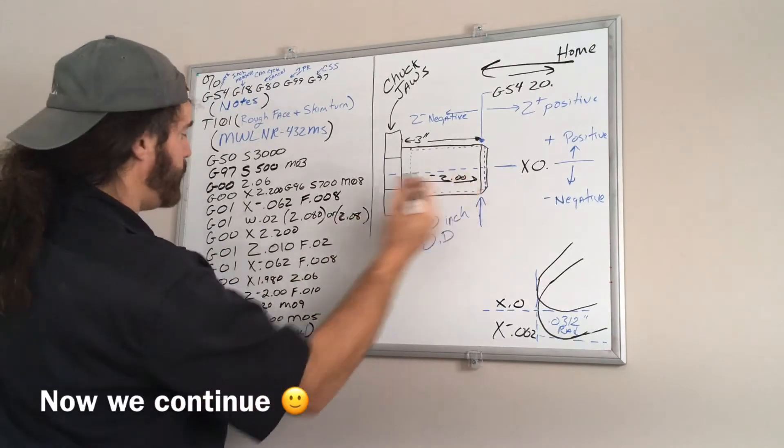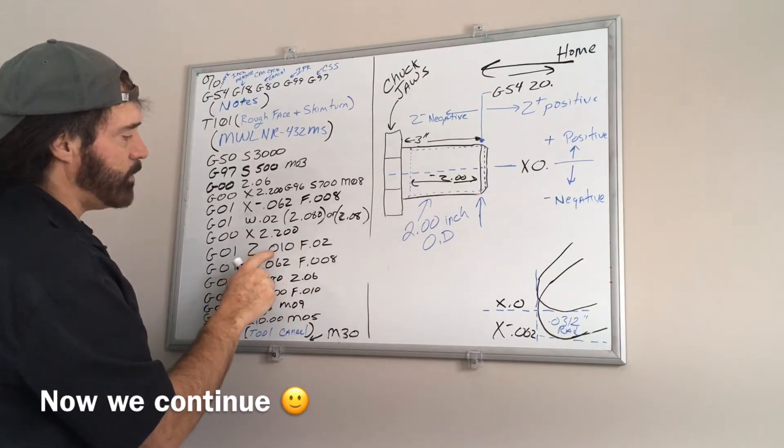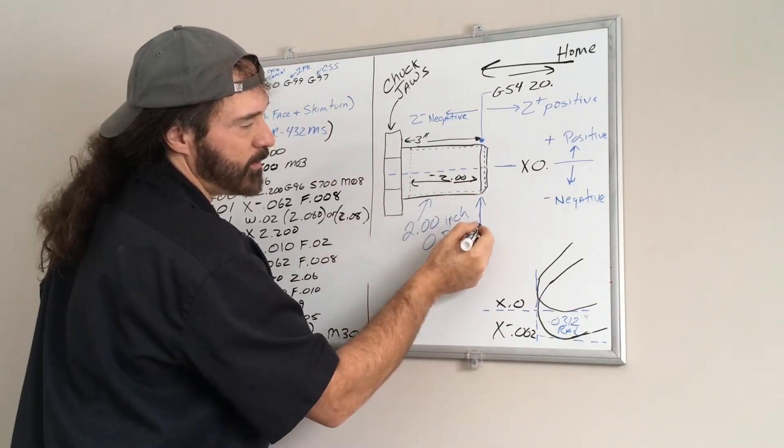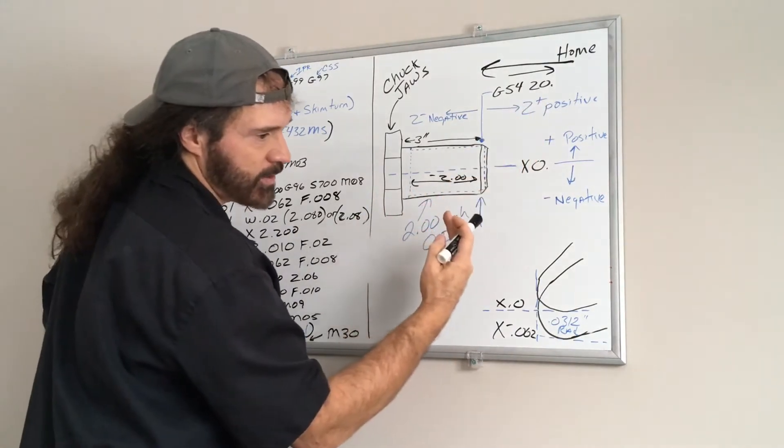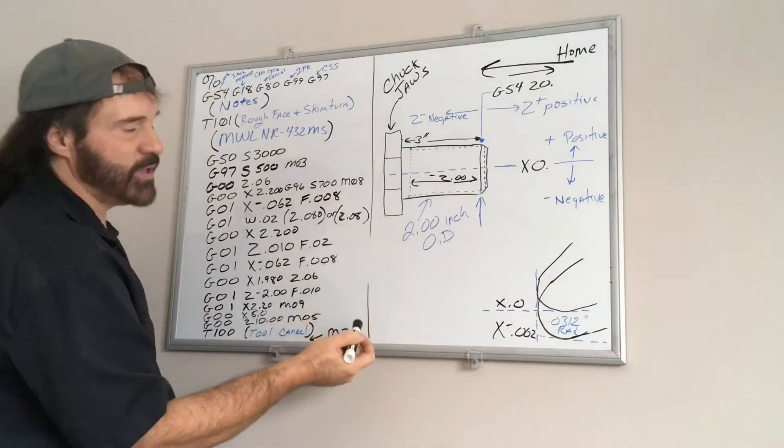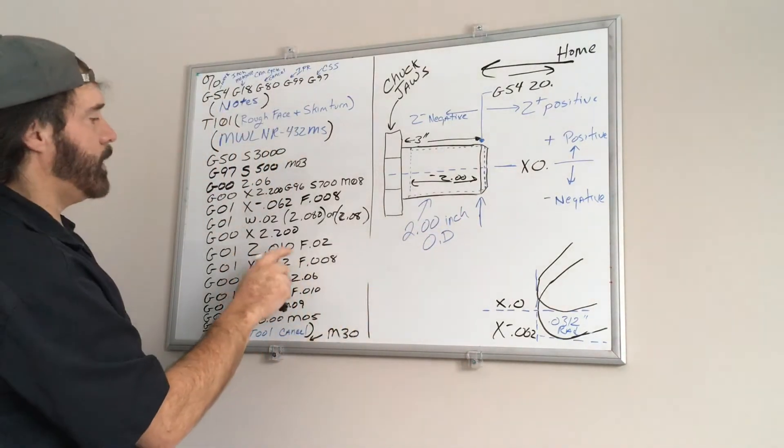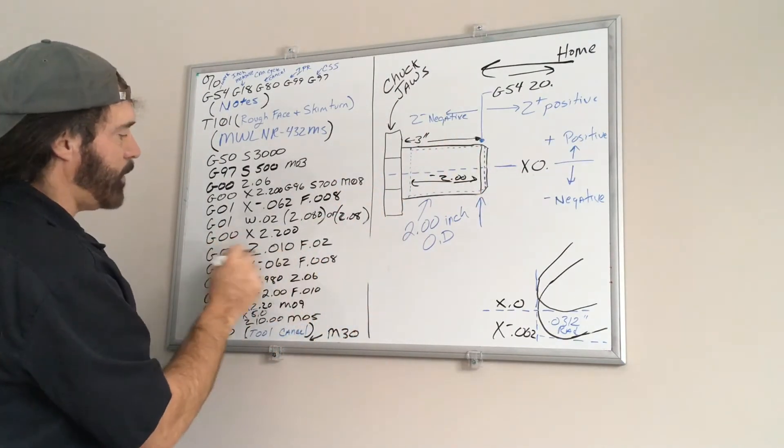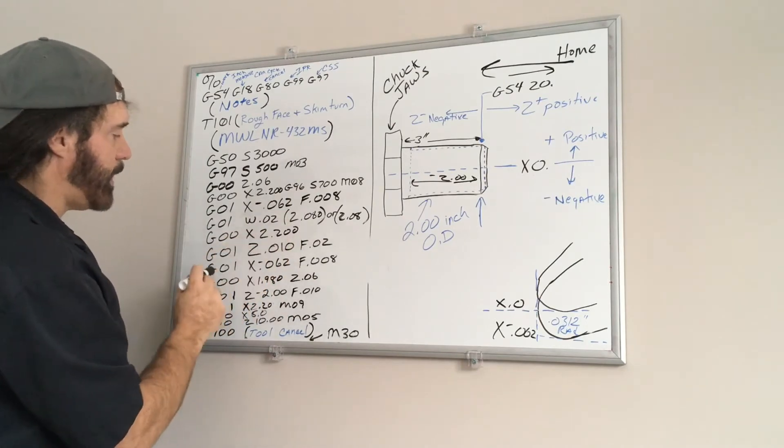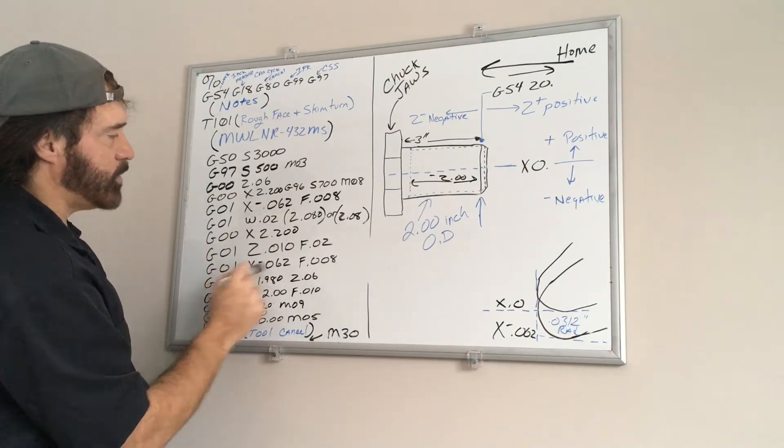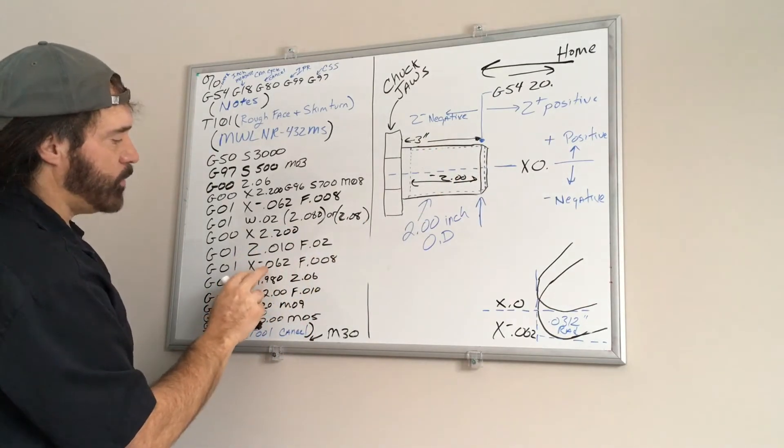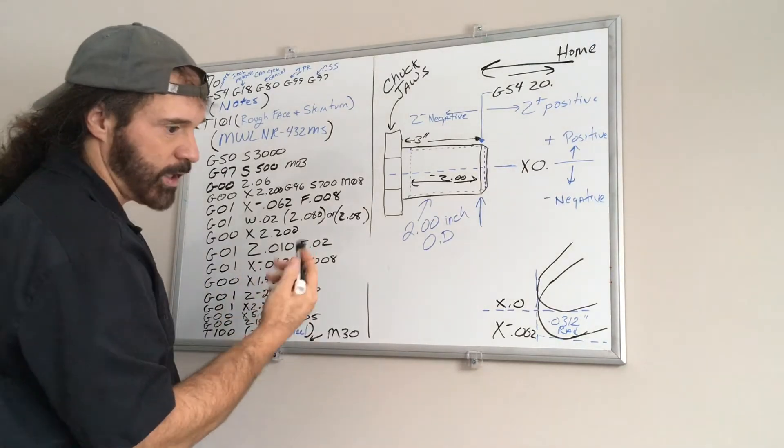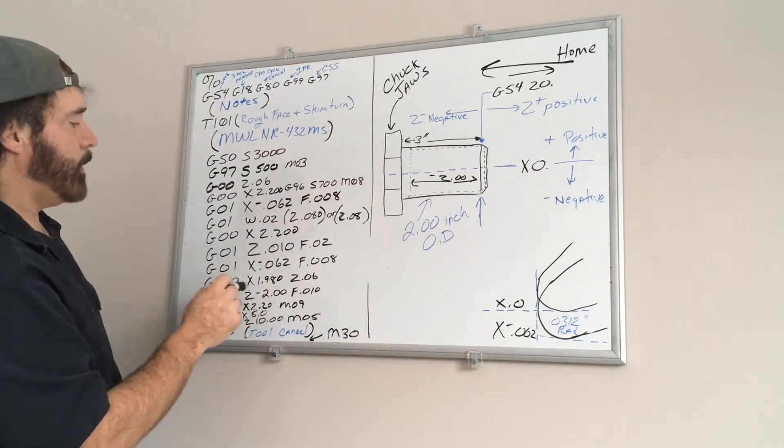And I'm going to feed in to a dimension Z 0.010, which means I'm 10 thousandths still in front of my G54 plane. I'm not at zero, I'm 10 thousandths in front of it, and I'm taking my second roughing pass. And I'm just doing a feed rate of 20 thousandths just to get there quick. I mean you could rapid it all this, but I just wrote it down as that. Now I'm doing my second pass going down X negative 0.062, feed rate of 8 thousandths per revolution. And a block. Okay, so now we did two complete roughing passes.